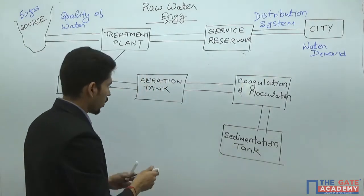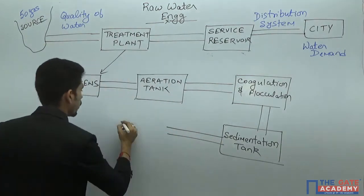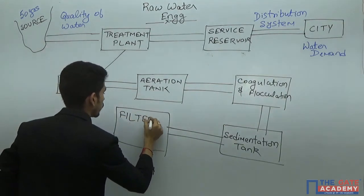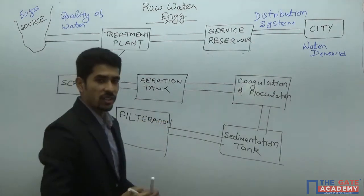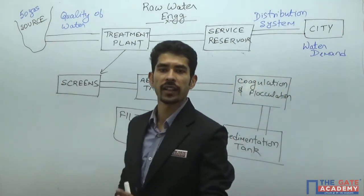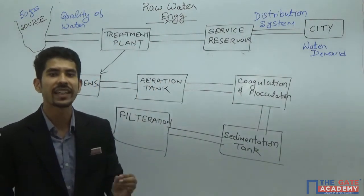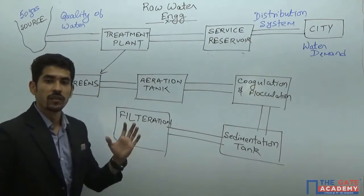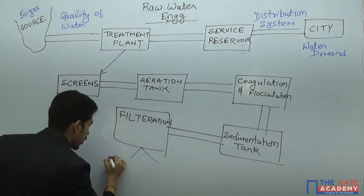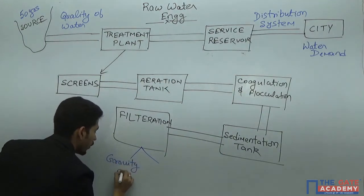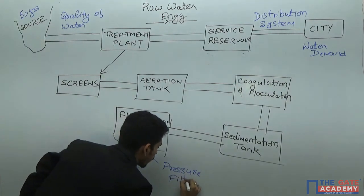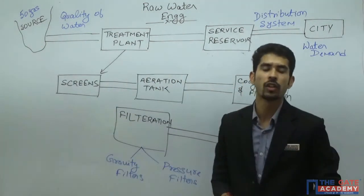After sedimentation, there is a process known as filtration. In filtration, we remove the dissolved organic matter which is present in water. If your raw water consists of any kind of dissolved organic matter, filtration will remove that. The filtration process is classified into two types: gravity filters and pressure filters. This treatment unit removes your dissolved organic matter.